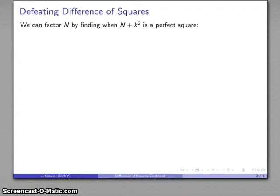So let's take a look at this. I can try and factor n by finding when n plus k squared is a perfect square, and let's see what's going to make that easy and what's going to make it difficult.